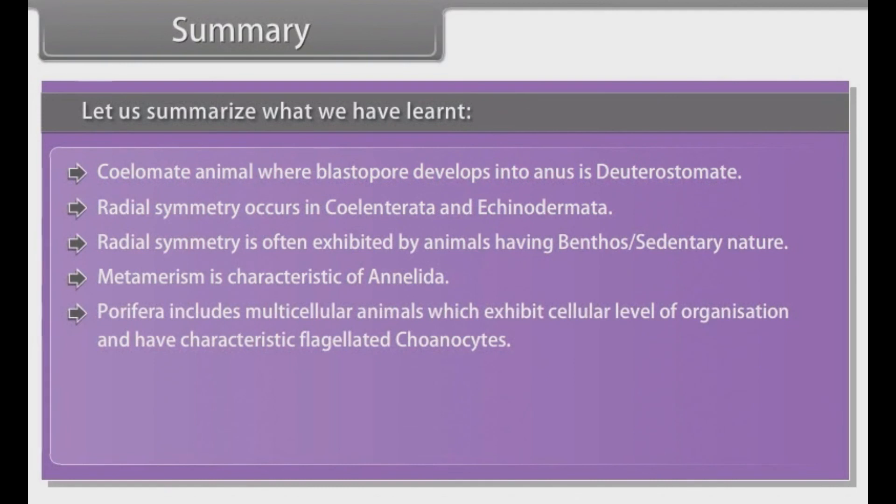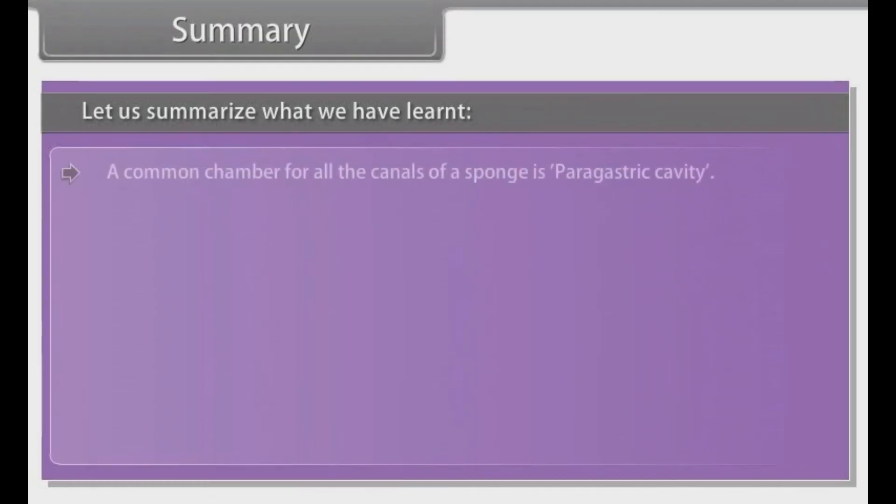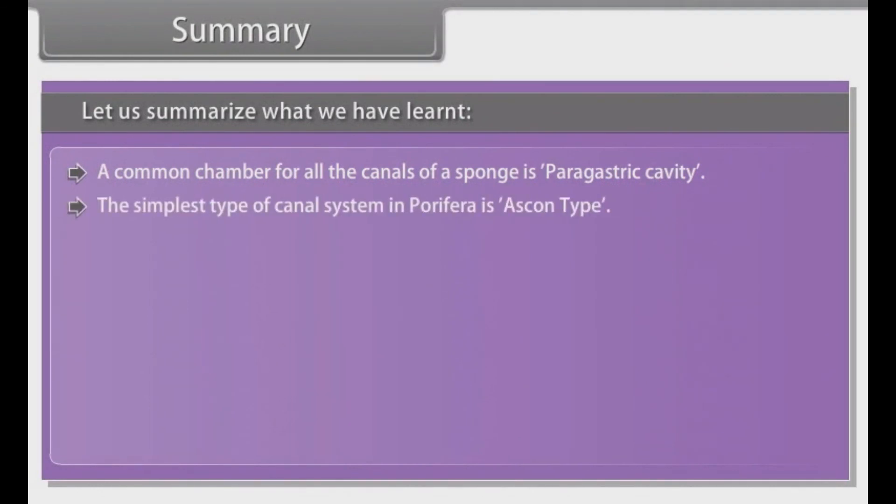Porifera includes multicellular animals which exhibit cellular level of organization and have characteristic flagellated choanocytes. Sponges are diploblastic and devoid of respiratory, excretory, circulatory organs and nerve cells. Canal system is found in sponges. A common chamber for all the canals of spongy is paragastric cavity. The simplest type of canal system in porifera is ascon type. The middle layer in body wall of porifera is called mesoglea. Classification of porifera is based on spicules.